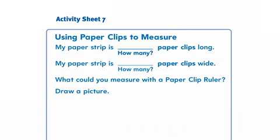Distribute a copy of Activity Sheet 7 to each student, and have students record the length of the construction paper strip on their Activity Sheets, using the number of whole paper clips as the length.